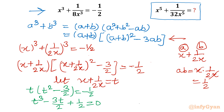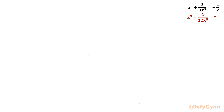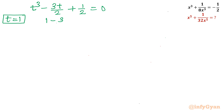We can see that t = 1 satisfies this equation: 1 - 3/2 + 1/2 = 0. So t = 1 is our base solution. We will convert this cubic into a quadratic easily using synthetic division.